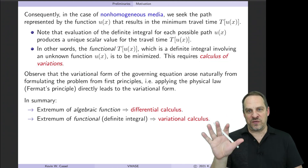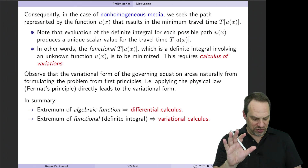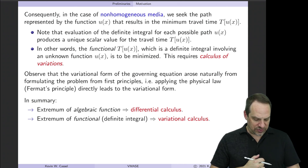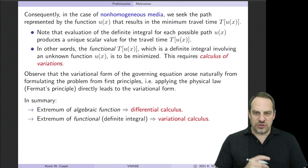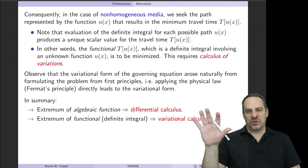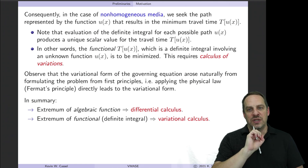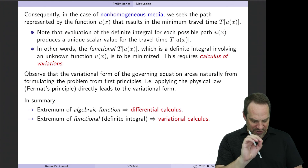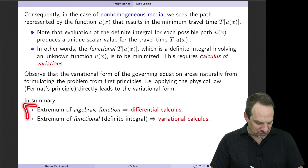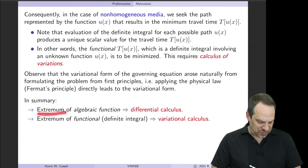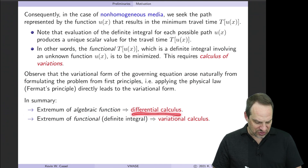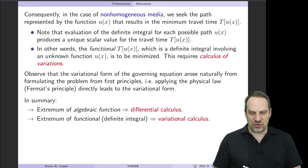For non-homogeneous media, we can't eliminate the definite integral — we have to keep it in order to solve for the path of the light. The same physical principle applied to homogeneous media gives a differential calculus problem, while a non-homogeneous medium gives a calculus of variations problem. In summary: extremum of an algebraic function uses differential calculus; extremum of a functional — a definite integral — requires variational calculus.